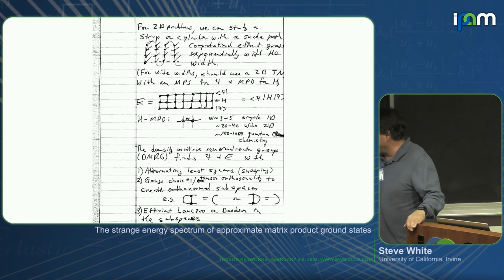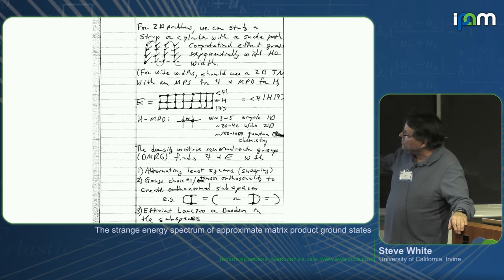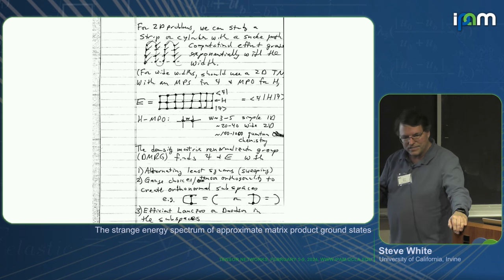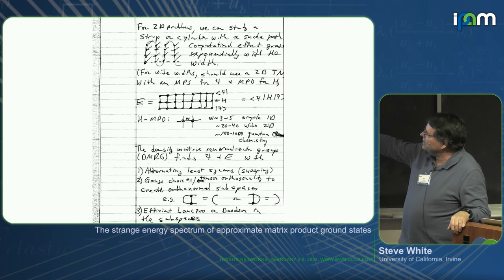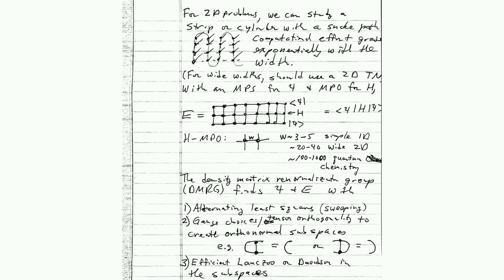Back to how DMRG works. For 2D problems, we can study a strip or a finite width cylinder, and what we do is map it to 1D. We choose a snake path through the system and a finite width, and the 2D nature of the system just shows up as longer interactions, which we can put into the system. The drawback is that the computational effort grows exponentially with the width of the system. The area law is essentially the width of the system, so the entanglement is growing, and our matrix product state has to get bigger and bigger.